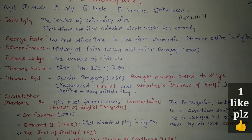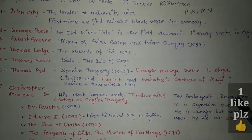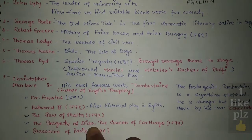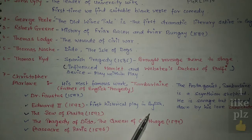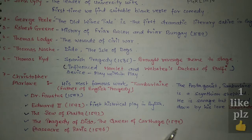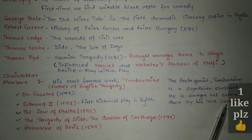Christopher Marlowe's most famous work is Tamburlaine, and he is called the Father of English Tragedy. His important works include: Doctor Faustus (1597), Edward II (1593) — the first historical play in English, The Jew of Malta (1592), The Tragedy of Dido Queen of Carthage (1594), and Massacre at Paris (1596). The protagonist of Tamburlaine is a Scythian shepherd who is savage but calmed down by his love Zenocrate.